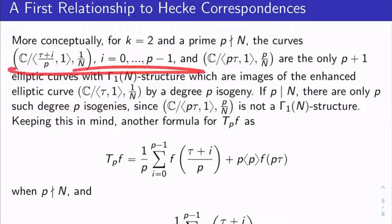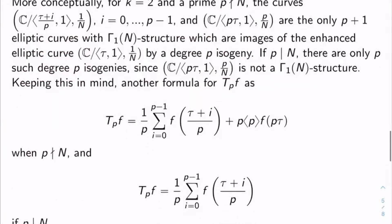We also saw that if p does divide n, there are only p such degree p isogenies, or p such images. And the reason for that is these are all good, but C mod the lattice generated by p tau and 1, comma, p over n, that's not a gamma sub 1 of n structure anymore, because p divides n, so p over n is not a point of order n. You have to get rid of this, and you only end up with p images.